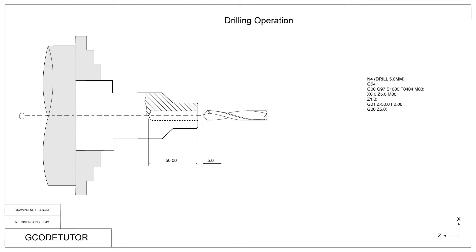To bring the drill out of the job, we use the rapid travel command G00 and bring it out with 5mm clearance from the face of the job. This makes sure any swarf can be relieved from the bore before we move the tool back to its tool change position. G53 changes our working datum to the machine datum, which has a separate Z0/X0 position used for tool change. In this case I have moved the Z position 210mm into the centre of the machine to keep the tools away from the sub spindle during tool changing — it's purely a safety measure and differs for every machine.